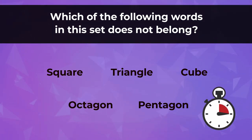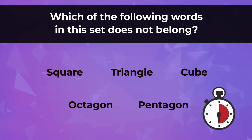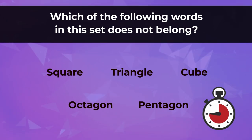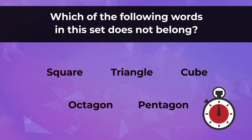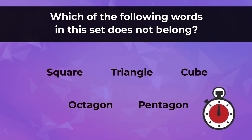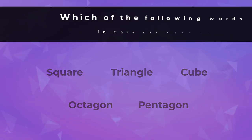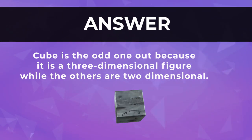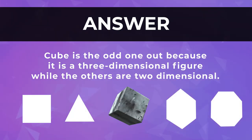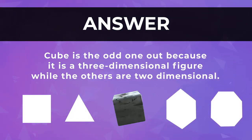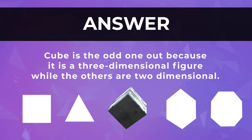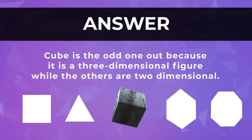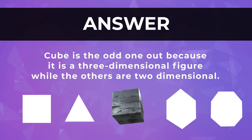You only have 10 seconds to answer this riddle. The answer is Cube — it is the odd one out because it is a 3-dimensional figure, while the others are 2-dimensional.